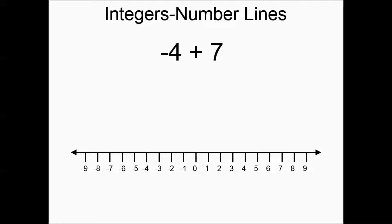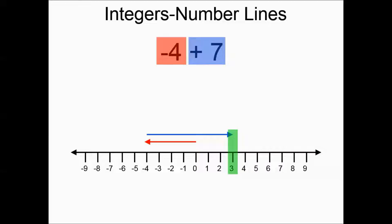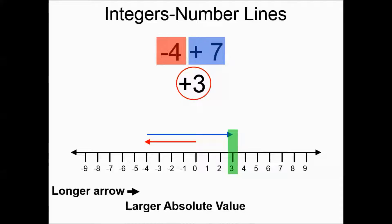Negative four plus seven — you could think of it as four negatives and seven positives. From zero you'd go left four, then right seven, and you'd end up at three, so your answer is a positive three. The arrows were in different directions, so we subtracted the two values. The longer arrow was the positive number, so the positive number had the larger absolute value, and the sign of the answer was positive.